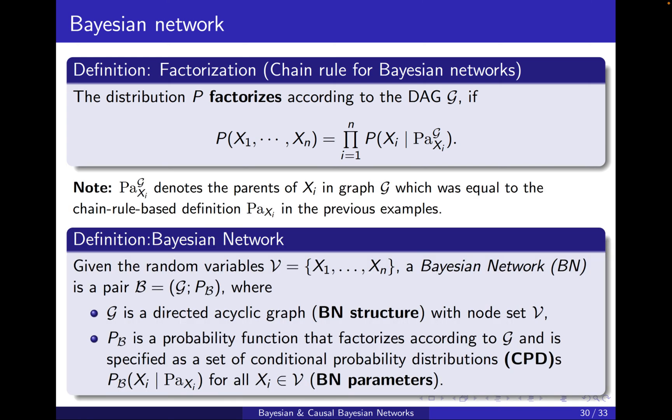What is a Bayesian network? Given the random variables x1 to xn, a Bayesian network abbreviated with BN is a pair of a graph and a probability function. The graph is a directed acyclic graph with node set V over the same node set, and it's called a Bayesian network structure.